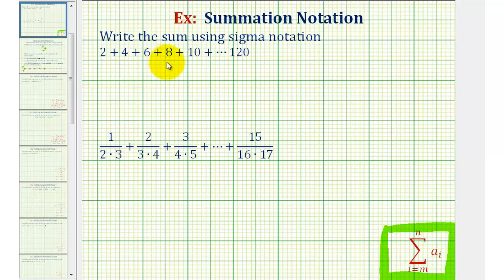To write this first sum using sigma or summation notation, we first want to look for a pattern so that we can write a formula to generate these terms. To do this, it's often helpful to write the terms in factored form or at least as a product.